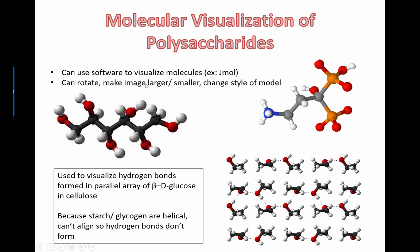You can change the way that the atoms and bonds are represented into what they call space-filling models, or more traditional ball-and-stick type models. Basically, if you look at them and rotate them, you can come up with different ways and ideas or hypotheses for how molecules might be able to interact with each other.